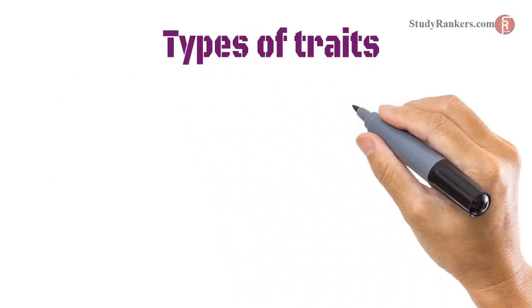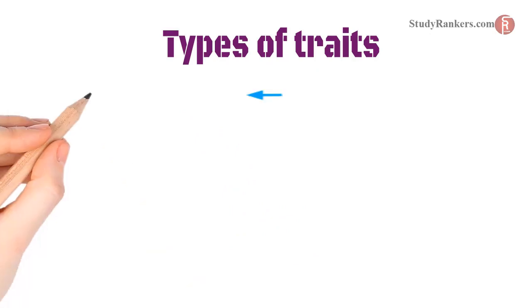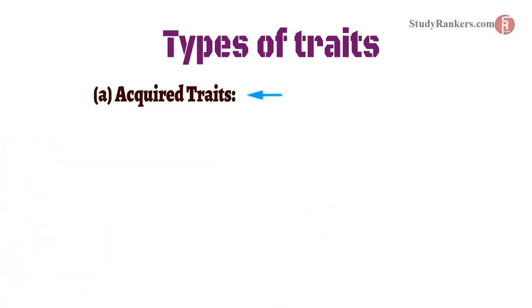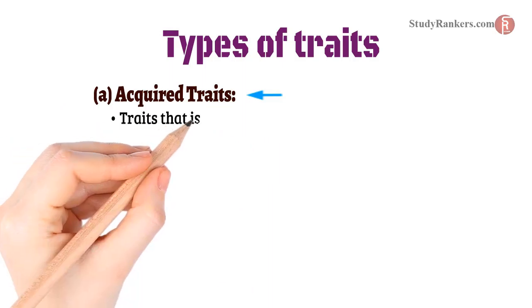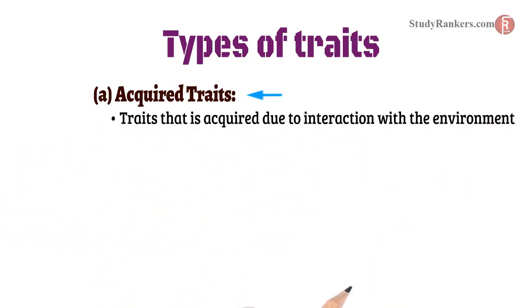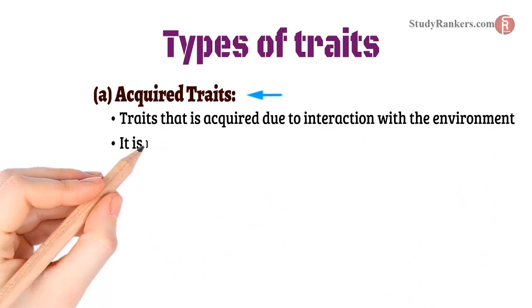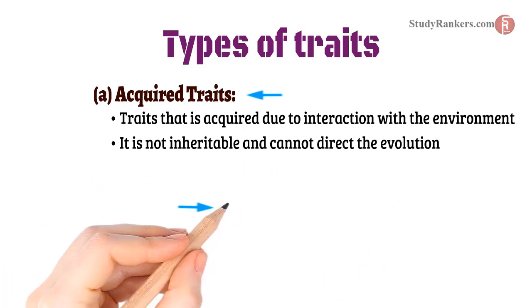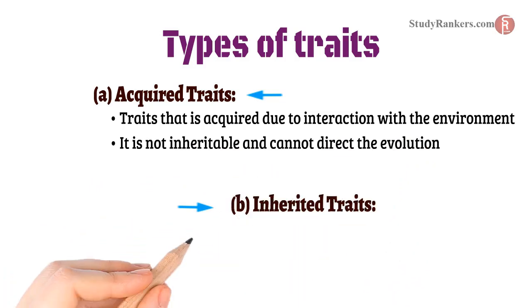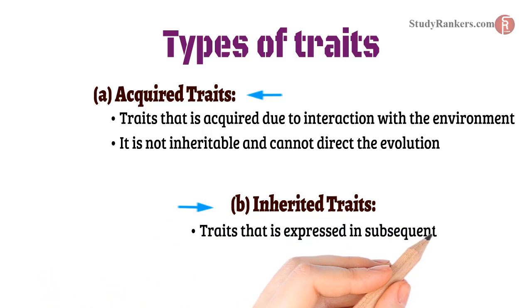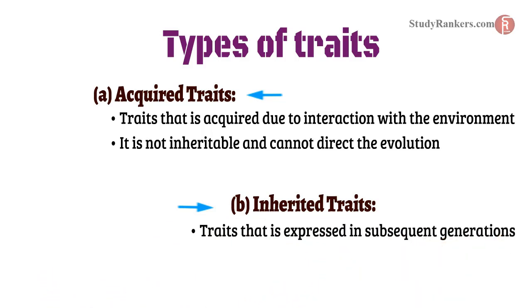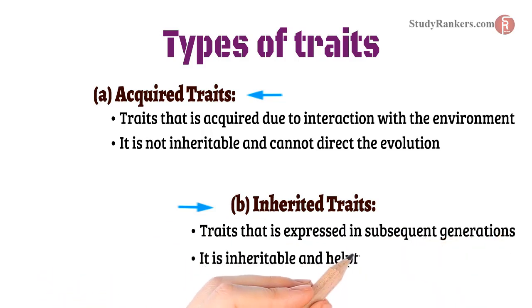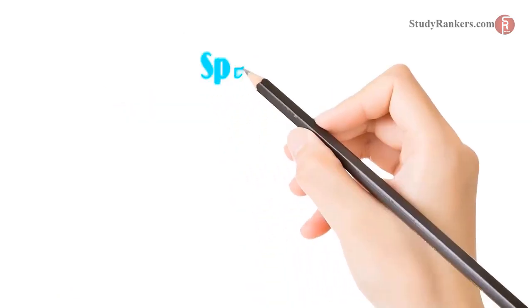Now we are going to study about different types of traits. A. Acquired traits: traits acquired due to interaction with the environment. They are not inheritable and cannot direct evolution. B. Inherited traits: traits that are expressed in subsequent generations. They are inheritable and helpful in evolution.